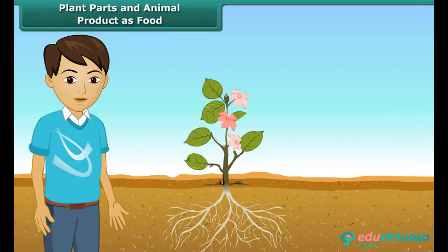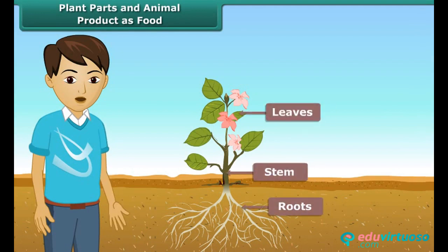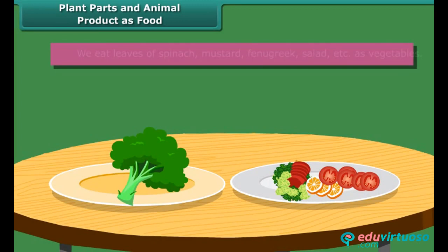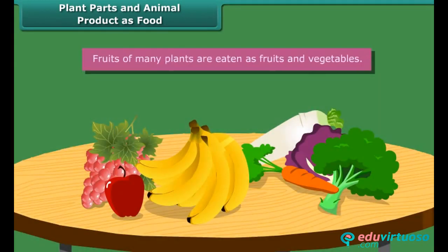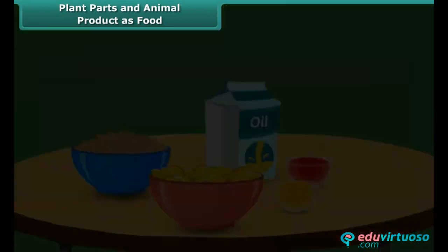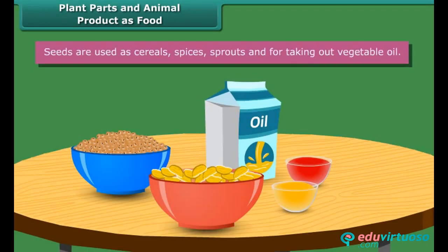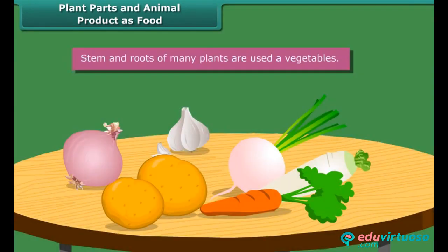Various parts of plants give us different types of food. We eat leaves of spinach, mustard, fenugreek, salad, etc. as vegetables. Fruits of many plants are eaten as fruits and vegetables. Seeds are used as cereals, spices, sprouts, and for taking out vegetable oil. Stem and roots of many plants are also used as vegetables.